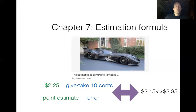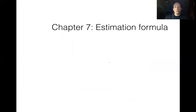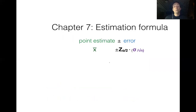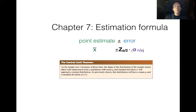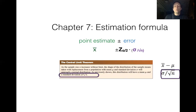That's the basic idea of how our estimation formula works. We make it more sophisticated by putting symbols in. The point estimate becomes our sample average (X-bar). The error term has two components: Z_α/2, which comes from the confidence level we need, and sigma divided by the square root of n, which comes from the central limit theorem. When we did the central limit theorem, we found the distribution of all possible sample averages has a standard deviation equal to sigma divided by the square root of n — that same term appears in our formula's denominator.